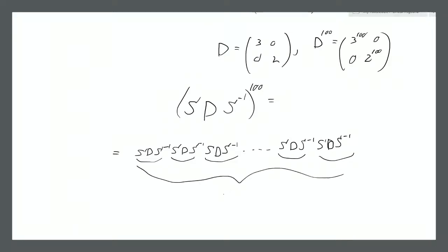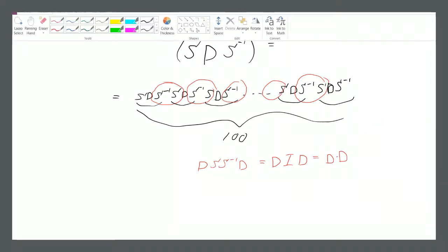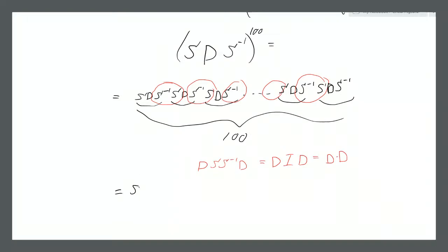We have 100 of these sets. But look what happens in the middle: we have S inverse times S, which is just the identity matrix. Another S inverse times S — identity matrix — and that continues throughout. These identity matrices don't do anything to our multiplication, so in the middle we end up with D times the identity times D, which is just D times D.